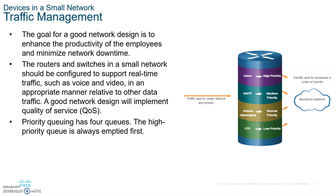Write this down: traffic management. You need to support real-time communication such as Voice over IP and streaming video. Use Quality of Service (QoS) to set priority queuing for packets. Not all routers support QoS automatically, so you may need a router — for example, a voice router — that has those features.